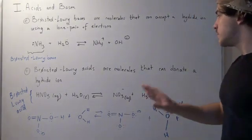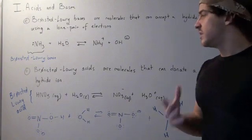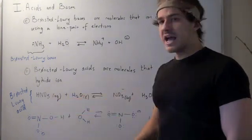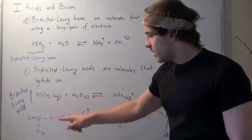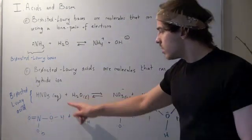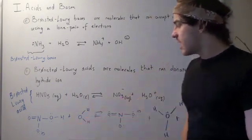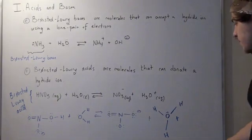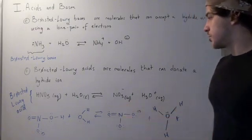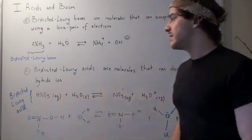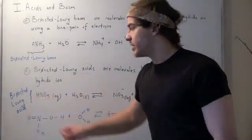A Bronsted-Lowry acid is a molecule that can donate a hydride ion. For example, let's look at the reaction of nitric acid and water. Nitric acid has an extra hydride ion, and the water has a lone pair of electrons that will take away this ion, producing a hydronium ion and a negatively charged ion. By definition, nitric acid, because it can donate an H, acts as a Bronsted-Lowry acid.